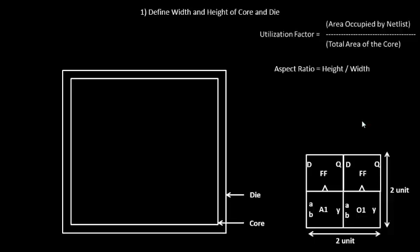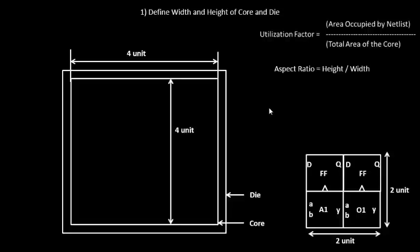Let's continue our discussion on defining the width and height of core and die. We looked into how we come up with a utilization factor and aspect ratio. Let's take another example: we have a square shape chip, with core height of 4 units and core width of 4 units. Now let us calculate the utilization factor and aspect ratio.